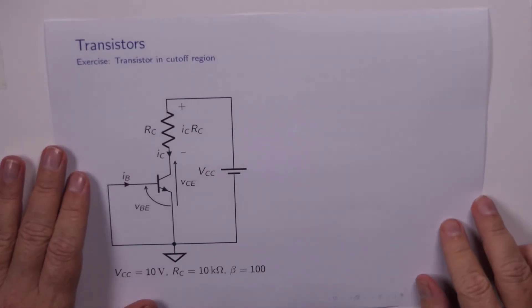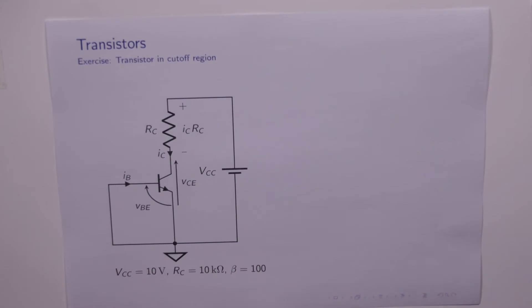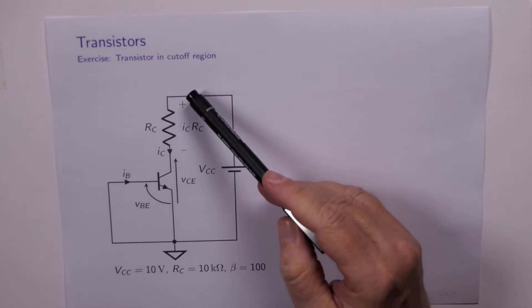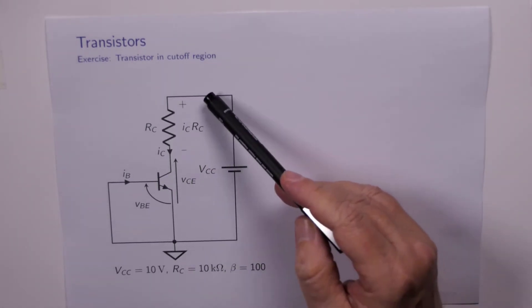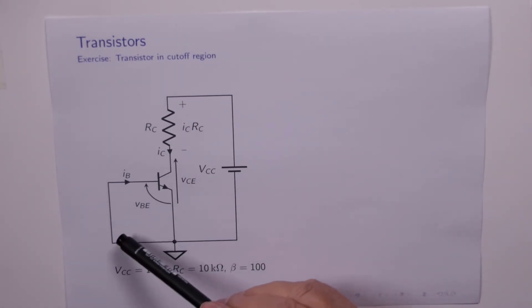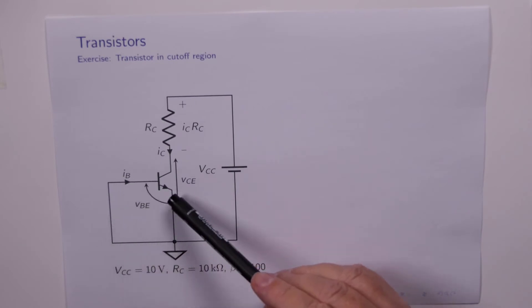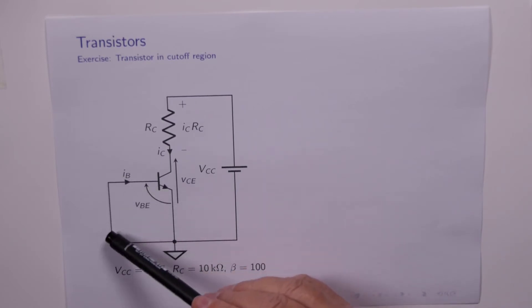So the first one we'll look at is this circuit here. So we've got a fixed voltage source VCC connecting the transistor with our output loop. We don't have a voltage source on our input loop, instead the base is connected to ground.